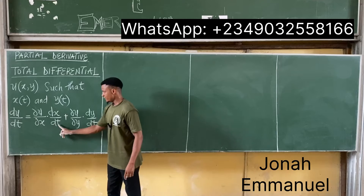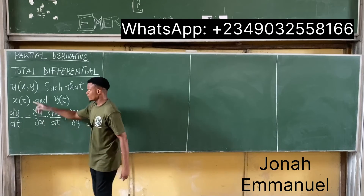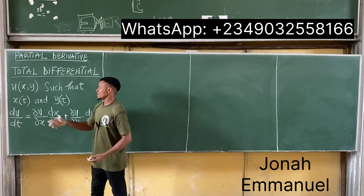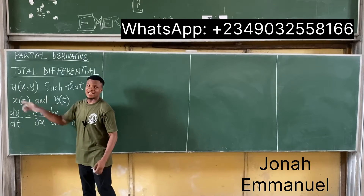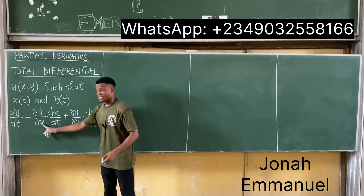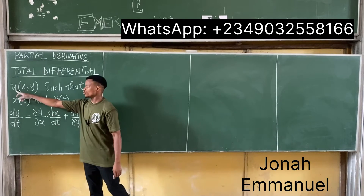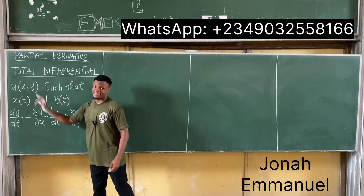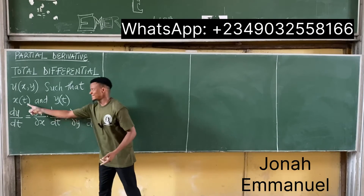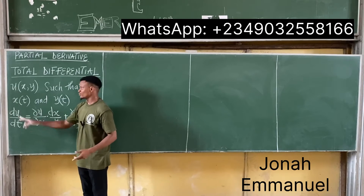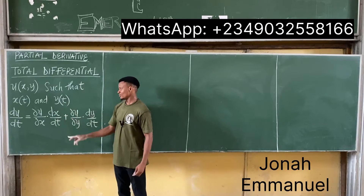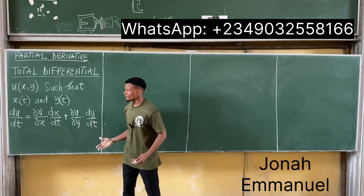Observe that these are partial derivatives, while those are total derivatives. The reason is that u is a function of two variables. When I differentiate u with respect to just x, it becomes partial because y remains. Similarly differentiating u with respect to y ignoring x is partial. But x is a function of just one variable t, so differentiating x with respect to t leaves no other variable — it becomes a total differential. Same for y.